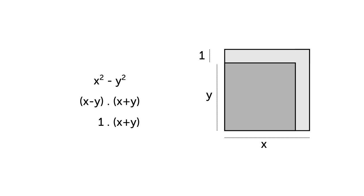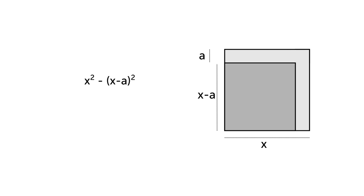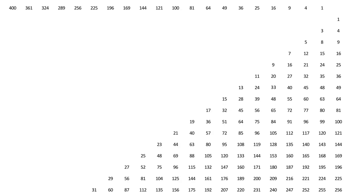We can prove this algebraically too. If instead of using x squared minus y squared for the two squares, we say that y is some number smaller than x — let's call it a — the formula now becomes x squared minus (x minus a) all squared, which expands to (x minus (x minus a)) multiplied by (x plus (x minus a)), or a times something, which means that a is always a factor. So if x minus y is 1, then 1 is a factor. But equally, if x minus y is 10, then 10 is a factor. If you then look at the opposite diagonal, you can see the same pattern: the second line is divisible by 2, the third by 3, and so on, forever.